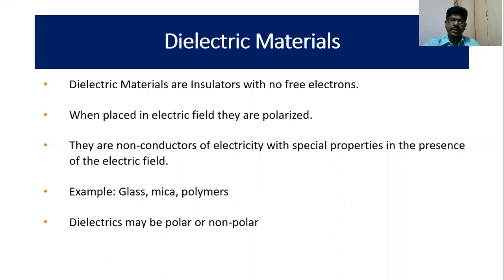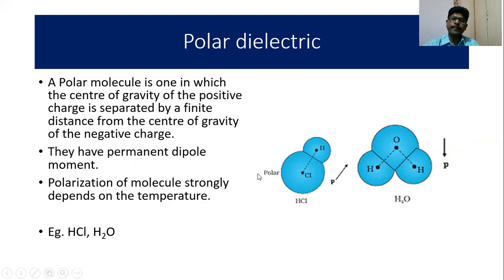Dielectric materials may be classified as either polar or non-polar. For polar, as you would see in the diagram, take the example of HCl — there is already a dipole existing between H⁺ and Cl⁻. Such materials are called polar dielectrics. A polar molecule is one in which the center of gravity of the positive charge is separated by a finite distance from the center of gravity of the negative charge.